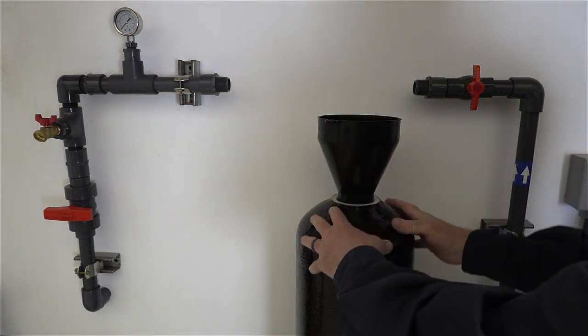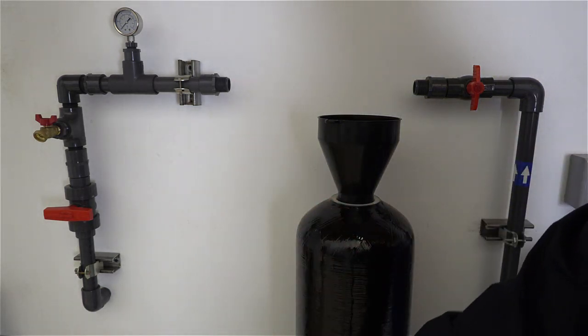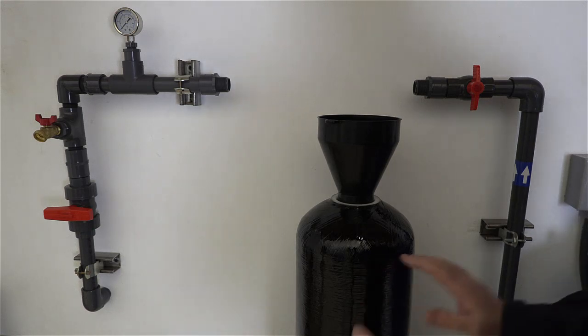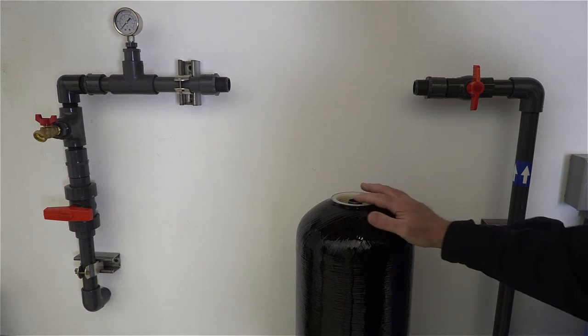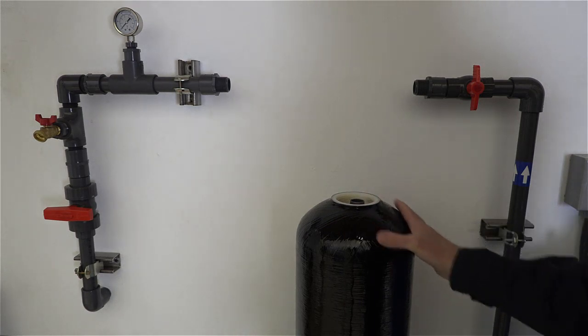Once you've got all your media in, it should be about at this level. Remove your funnel, and you'll have your D tube with media installed.